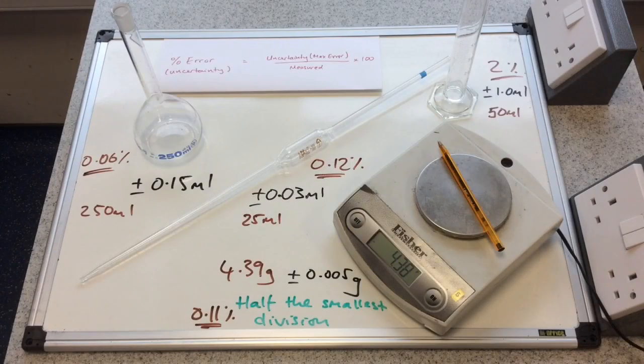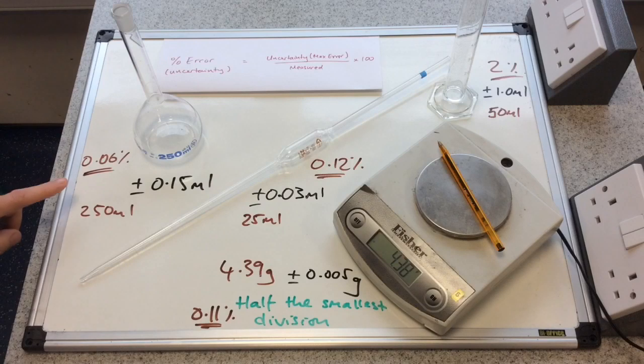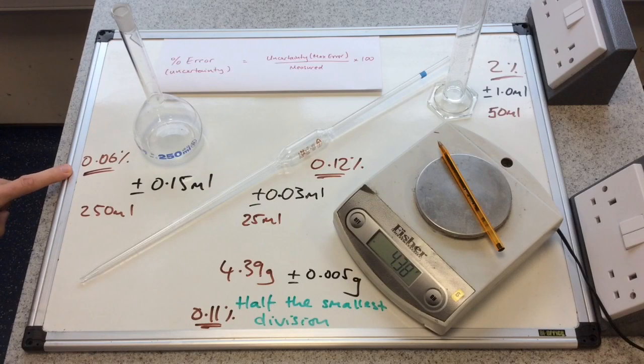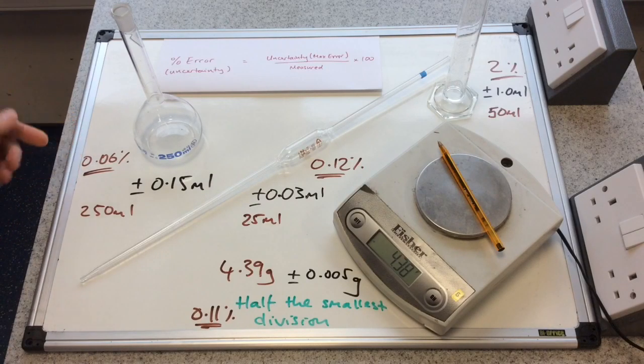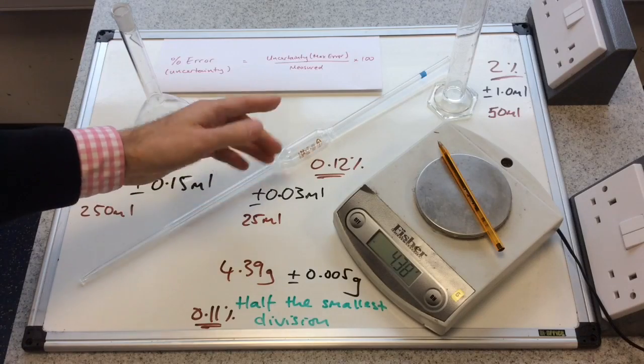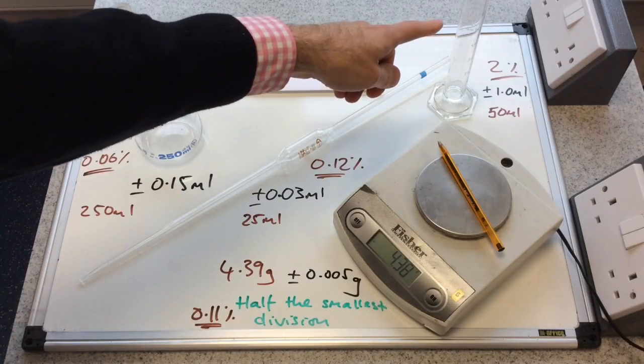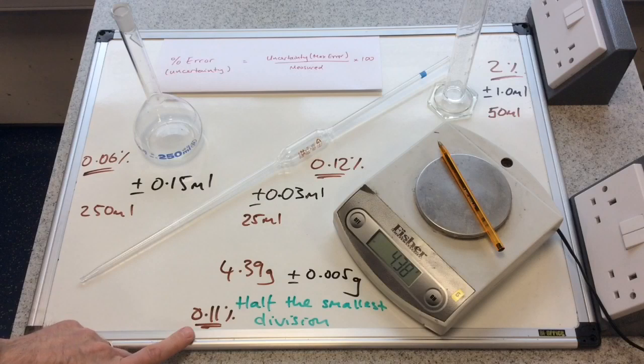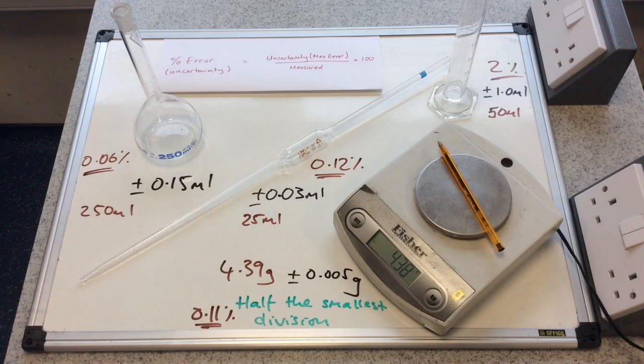So you can see my answers now. We've got 0.06% for the flask, 0.12% for the pipette, 2% for the measuring cylinder, and 0.11% for the balance.